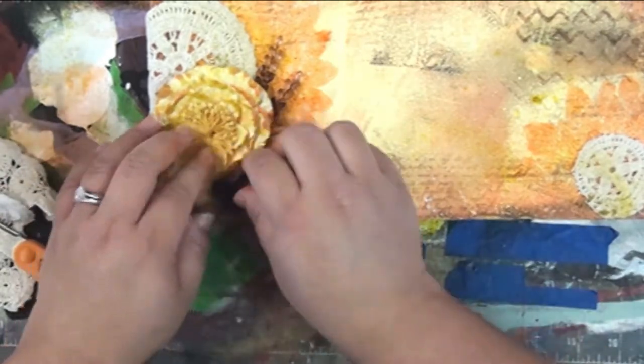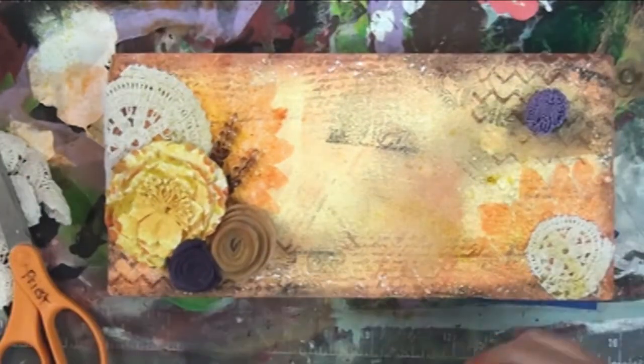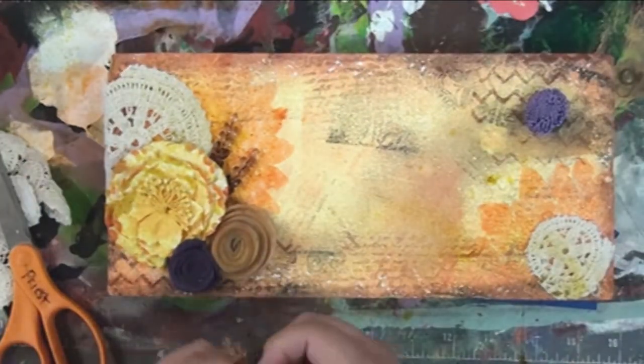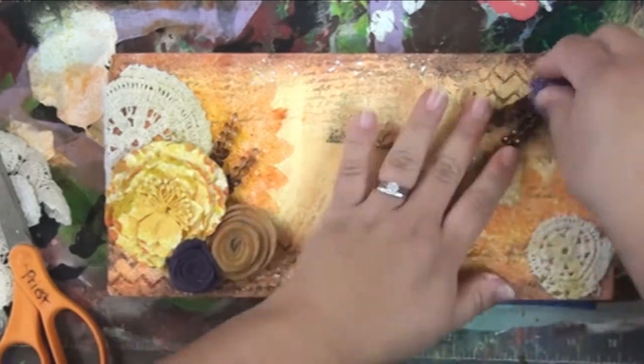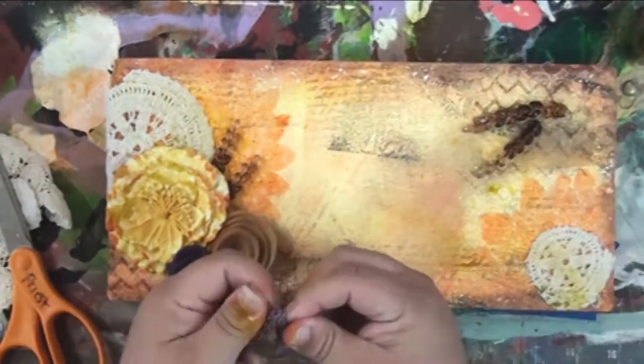You can also use the spray ink to do some splatters on that smooth foam. So spray ink works, your regular ink pads work, paint—all kinds of things work really great on the smooth foam surfaces.